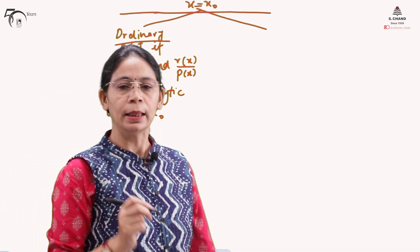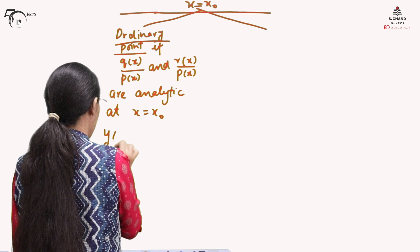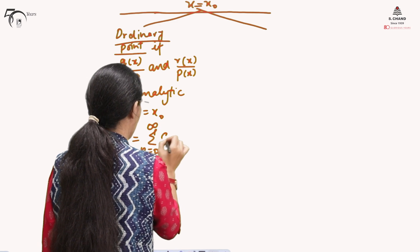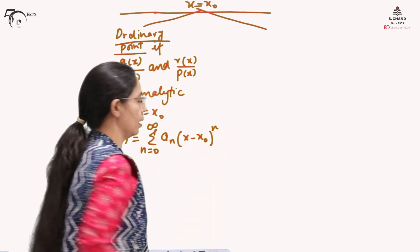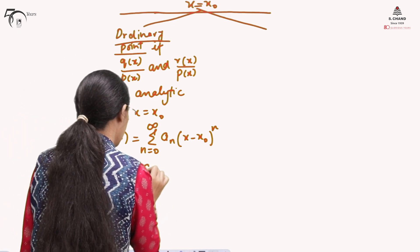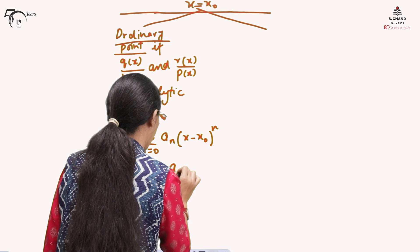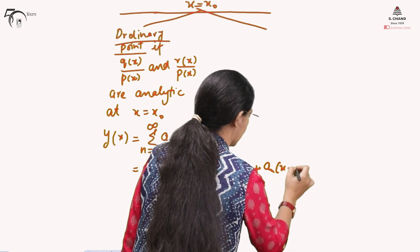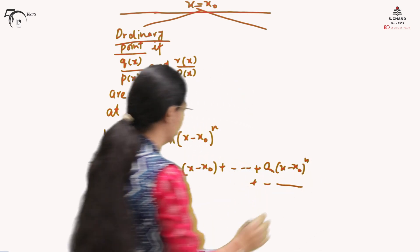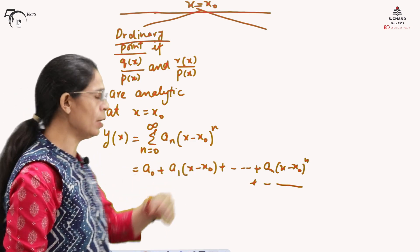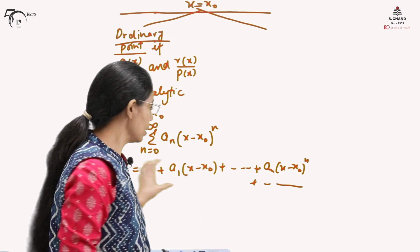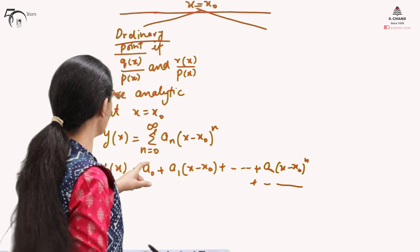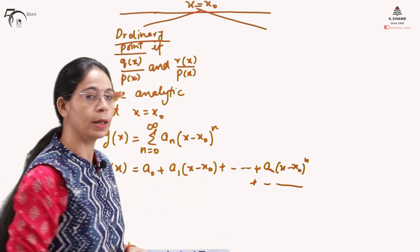If x equals to x-naught is an ordinary point, then the solution can be written as y(x) = sigma (n from 0 to infinity) of a_n times (x minus x-naught) raised to the power n. Expanded, this is a_0 + a_1(x - x-naught) + a_2(x - x-naught)² + ... + a_n(x - x-naught)^n + and so on. Since the number of terms is infinite, this is a series — therefore it is called a series solution.